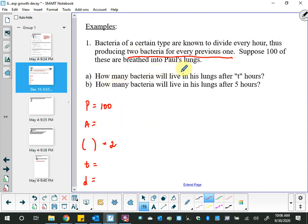It says, how many bacteria will be living in his lungs after T hours? So this is a question mark, because I don't know what the T is. Or, if you prefer, they're asking you to put T in for T. This is unknown as well, because it says how many bacteria will live in his lungs in the future. And then D says, way back at the top, bacteria of a certain type are known to divide every hour. So that means D is one. And question A is actually just, will you please make a formula and make it look pretty?